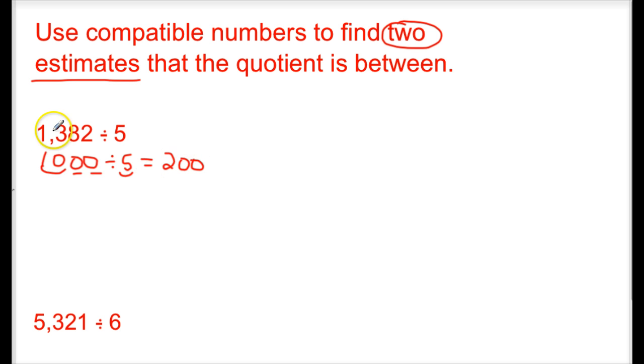And then I need to do this one more time because I need to find a second number. Because remember, I'm trying to find two estimates that the quotient could be between. And also, I can say that the 1 and 3, I can make that a 15, because 15 would be divisible by 5. So now this would be 1,500 divided by 5.